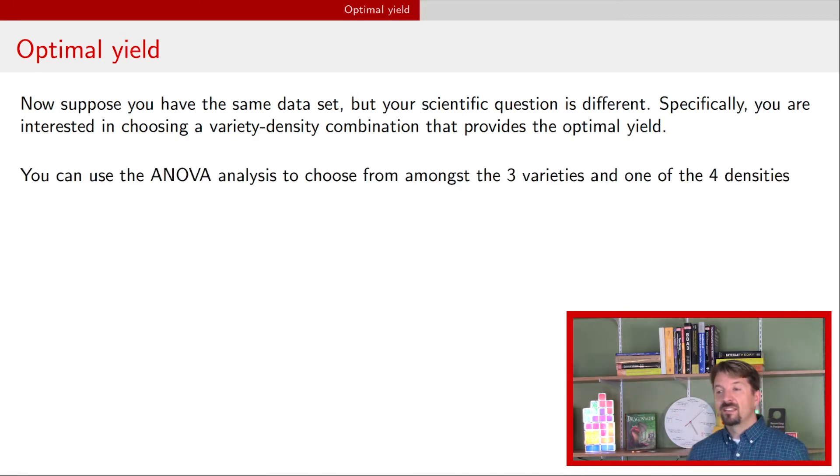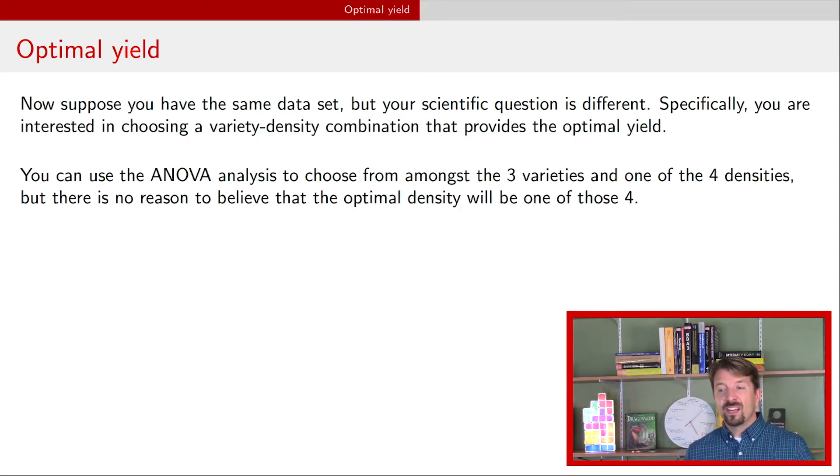One approach based on the analysis from the previous videos is to fit ANOVA models and choose the particular variety density combination that maximizes yield. But there's not really any reason to believe that the actual optimal density is one of the four that you just happen to have had in the previous experiment.